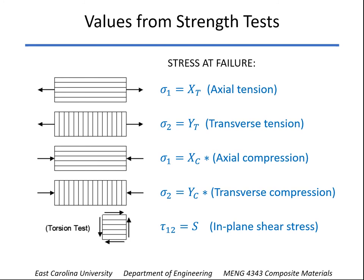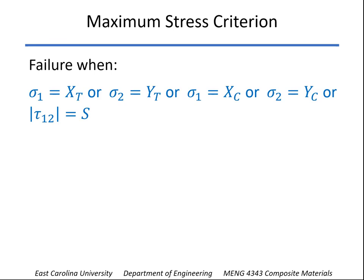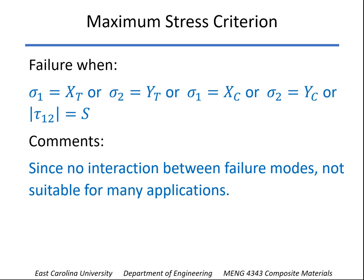When tau12 reaches a value of capital S, that's failure. The asterisks just mean that you can report compression strength as either positive or negative. In our calculations, we're going to always enter those values as negative — so instead of saying the compressive strength is 150,000 psi, we'll enter it as minus 150,000 psi. So when the stress is negative, sigma2 would be negative at failure, and we'll say when it reaches minus 150,000 psi, that's failure. Whenever one of these stress values reaches the strength value, that would be the maximum stress criterion — no interaction — which works okay for some applications but not for a lot.